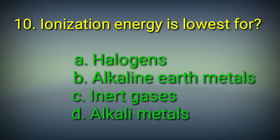10th question: Ionization energy is lowest for — Options: A. Halogens, B. Alkaline earth metals, C. Inert gases, D. Alkali metals. Answer: Option D. Alkali metals. Ionization energy is lowest for alkali metals.